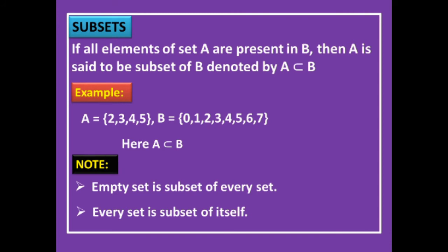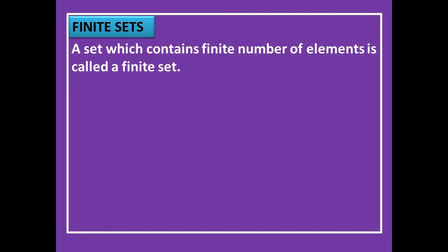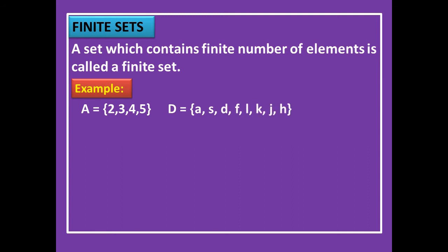Now let us move on to finite sets. A set which contains a finite number of elements — that is, a countable number of elements — is called a finite set. For example, A = {2, 3, 4, 5} has 4 elements, and D = {A, S, D, F, L, K, J, H} has 8 elements. Since there are only a limited number of elements, both are called finite sets.